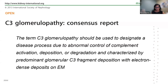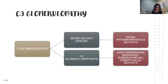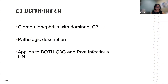This was the consensus report in 2013. They defined C3 glomerulopathy as a disease process due to abnormal control of complement activation, deposition, or degradation, characterized by predominant glomerular C3 fragment deposition with electron-dense deposits on electron microscopy. Dense deposit disease has dense intramembrane deposits; C3 glomerulonephritis has light amorphous deposits in all locations — mesangial, subendothelial, and subepithelial. C3 dominant GN.